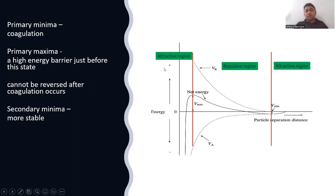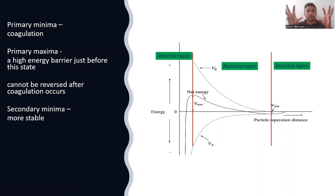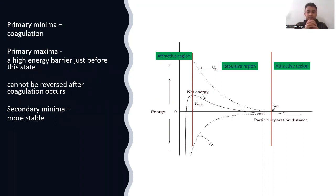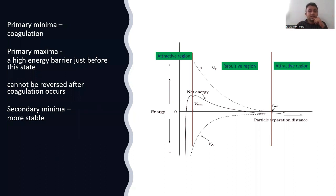DLVO suggests that in latex particles or colloidal systems there are attractive forces and repulsive forces. Importantly, they consider only these two forces — not steric, not kinetic, not thermodynamic forces. They measure the surface potential of these particles and quantify both the attractive forces and the repulsive forces.